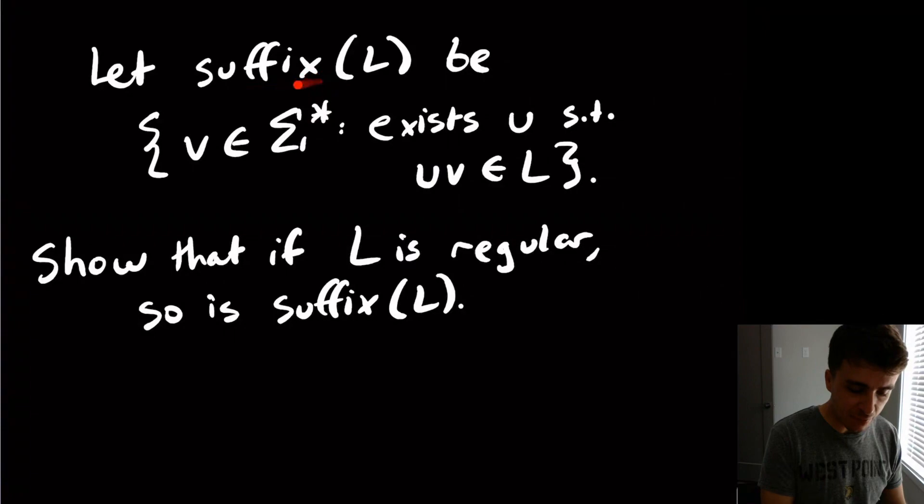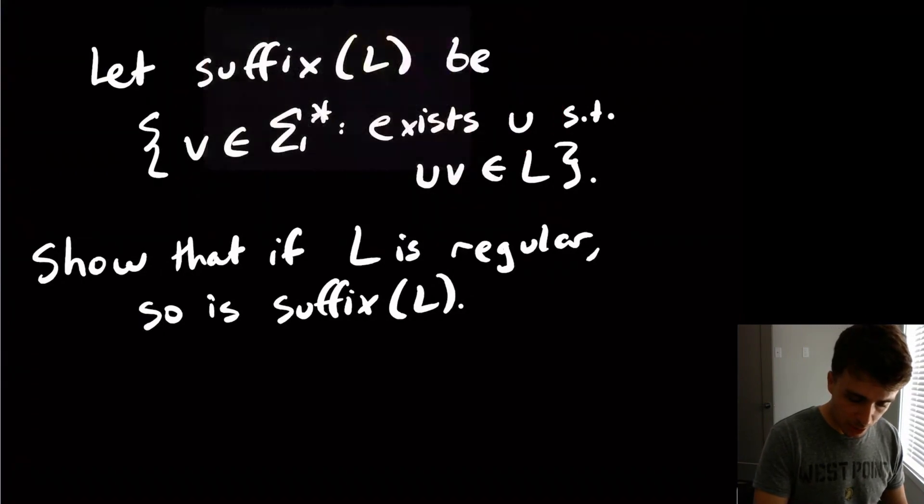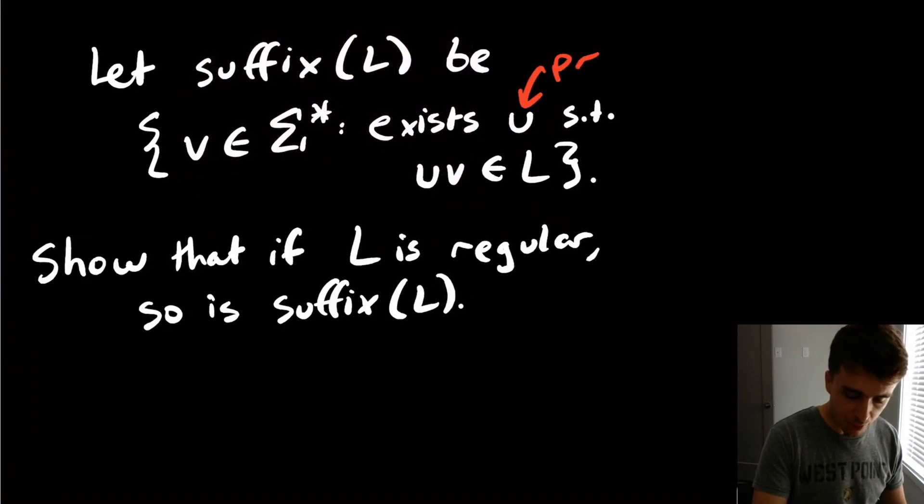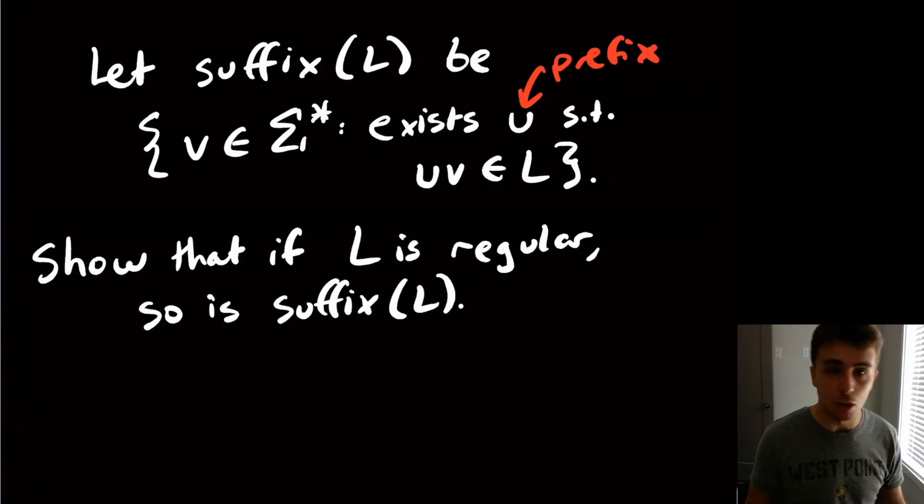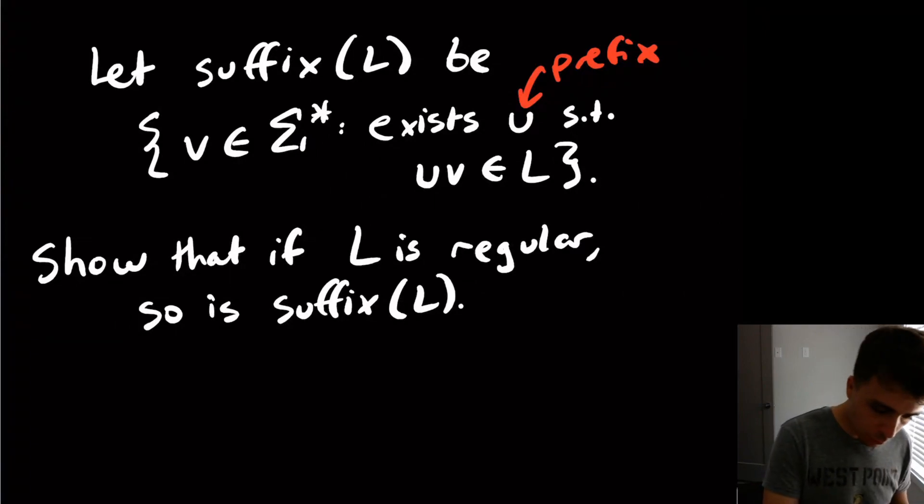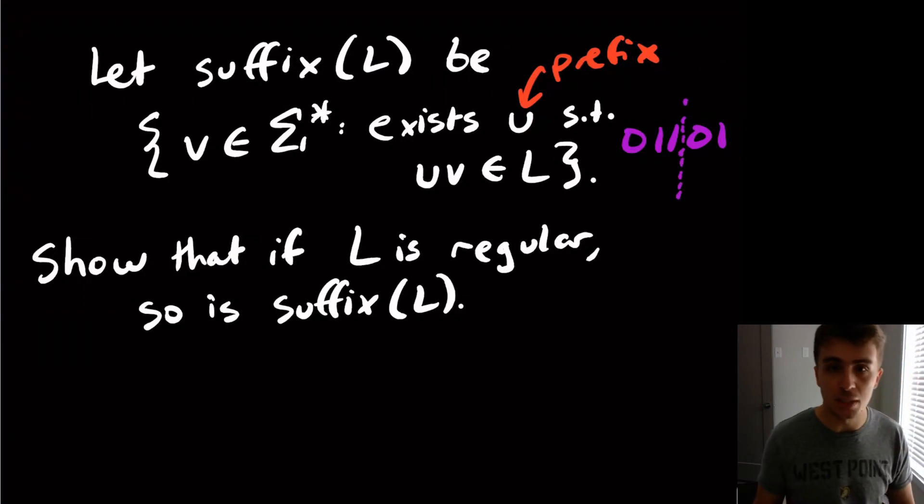So what is a suffix? I'm going to define the suffix language to be suffix of L, which is all the strings V such that there is a prefix. This U right here is the prefix, the beginning of the string, and V is the end of the string. So if I have example 01101, and I partition it into these two parts, then the 011 is the prefix and 01 is the suffix.